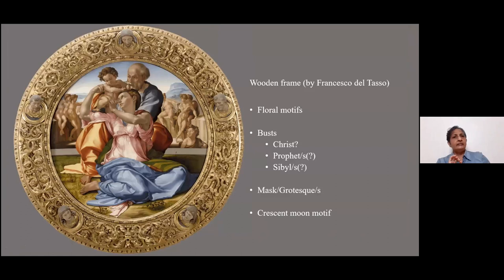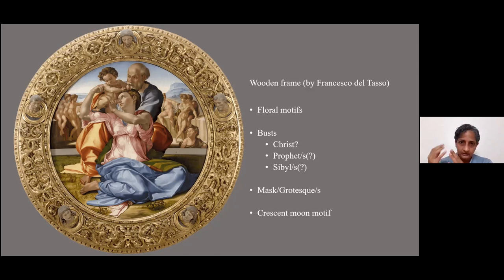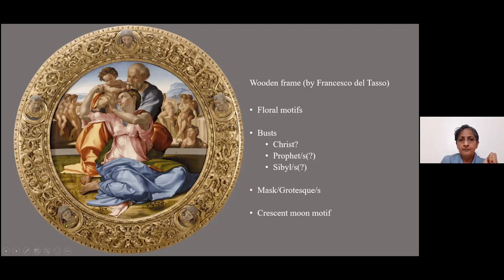Michelangelo's Doni Tondo was commissioned by a wealthy Florentine called Angelo Doni. He was married to somebody called Maddalena Strozzi. The Strozzi were a very important Florentine family, and in this wooden frame, there is a reference to his wife's family. So let's begin with the wooden frame, which has five busts. In the center, this is probably Christ. There are two male busts and two female busts — the two male busts likely represent prophets from the Old Testament, and the two female busts represent Sibyls from the classical pagan tradition.